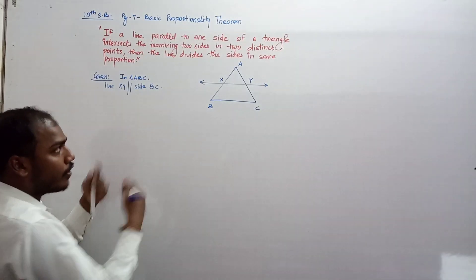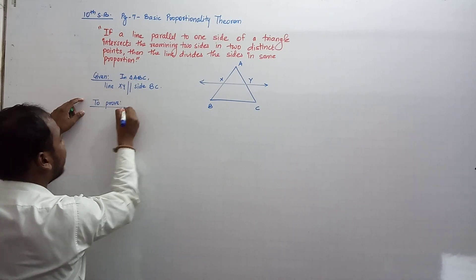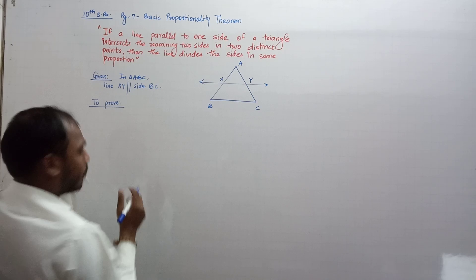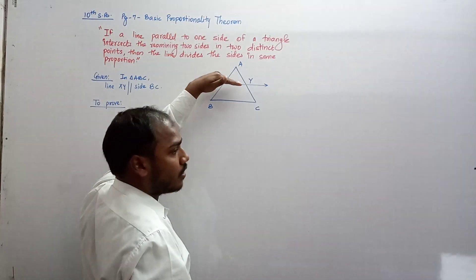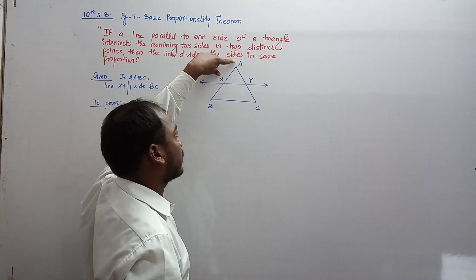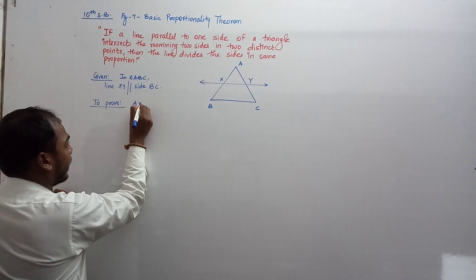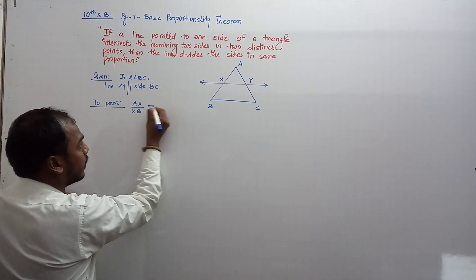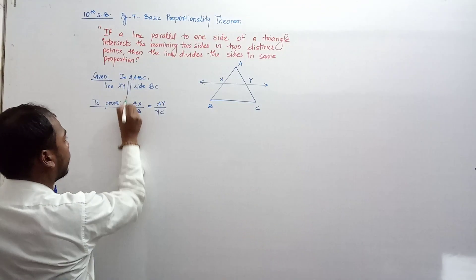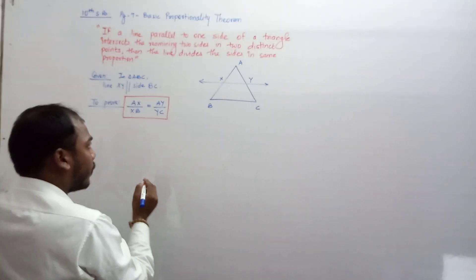Now we write 'To Prove.' The last part of the statement says the line divides these sides in the same proportion. That means line XY divides sides AB and AC in the same proportion — that is, AX divided by XB equals AY divided by YC. This is what we need to prove.